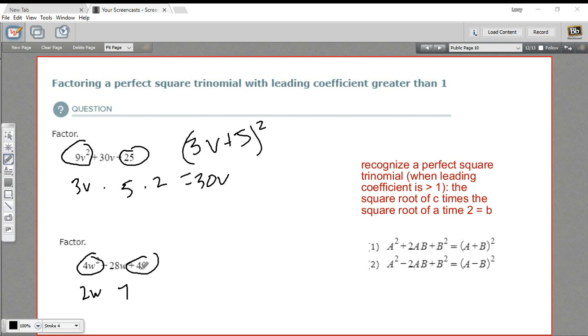And actually this could be 7 or negative 7, right? So if we multiply this by 2, we would get 28w. But in this case, if it was a negative 7, we'd get a negative 28w. So since there's a negative sign in the middle here, this is going to follow this pattern right here.